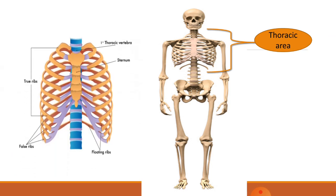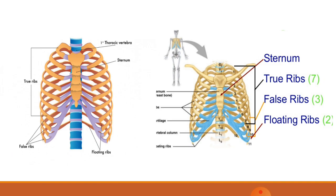Now the next portion is the thoracic area or thoracic cavity. It consists of the thoracic vertebrae, the central sternum bone, and the ribs, which are of two types: true ribs and false ribs. The very lower ones are also known as floating ribs. There is one sternum bone, seven true ribs on each side, three false ribs, and at the bottom two floating ribs. Remember these numbers, as we will calculate all bones of the human body in the next presentation.